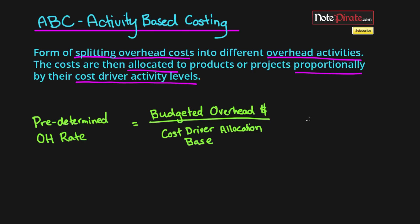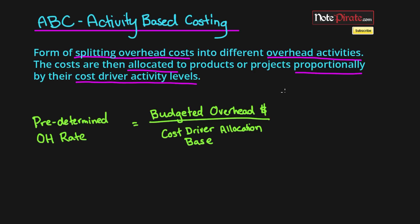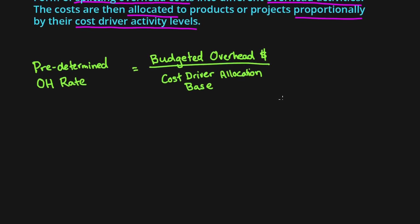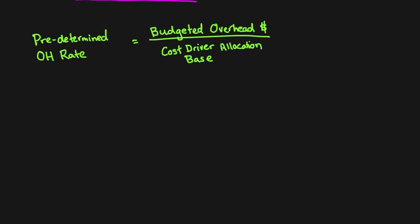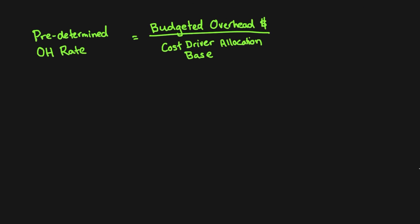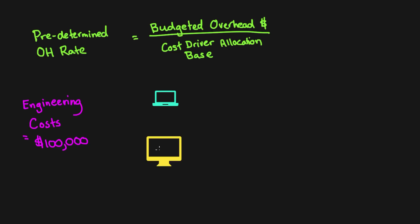But what if we have product lines that use a different amount of overhead? For instance, let's say our total overhead costs are engineering costs — one hundred thousand dollars — and we have two products: a laptop and a desktop. If the desktop product line uses more of the engineering overhead, shouldn't we allocate more of the hundred thousand dollars toward that product line?